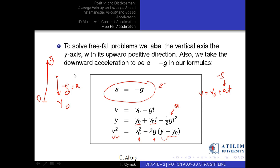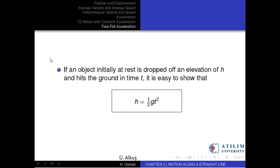If an object initially at rest is dropped from an elevation h and hits the ground in time t, it is easy to show that h equals one-half g*t squared. Finally, in all the problems and examples presented in the video sections and studied in class, we shall always neglect the effects of air. That concludes the second chapter.